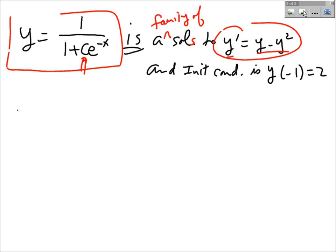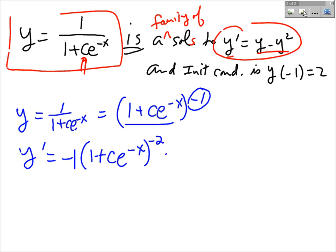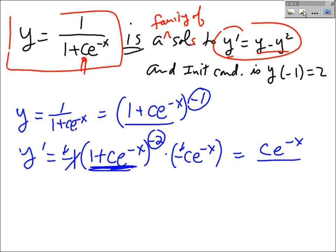Let's work that out. To find y prime, rewrite y as (1 + c·e^(−x))^(−1). Then y prime is: keep the function the same, bring down the power of negative 1, make the new power negative 2, then multiply by the derivative of the inside, which is negative c·e^(−x). The two negatives cancel, giving y prime equals c·e^(−x) divided by (1 + c·e^(−x)) squared.